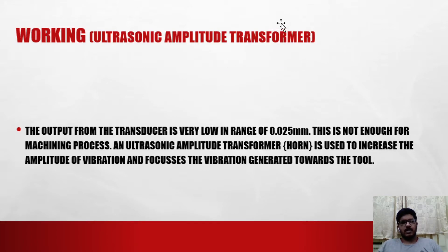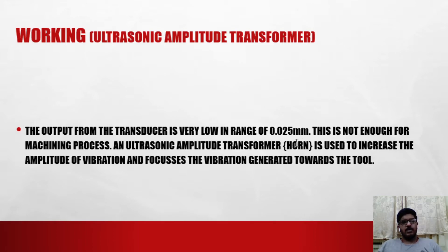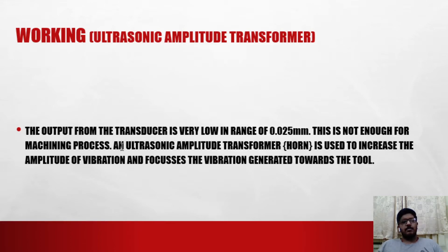Next we see the working of the ultrasonic amplitude transformer, or horn. It takes the output from the transducer. The movement which the transducer produces is very low — around 0.025 millimeters — which is not enough for effective machining. That's where the horn comes in. It amplifies the output from the transducer to a more significant amplitude, and that output is focused onto the tool for effective machining.